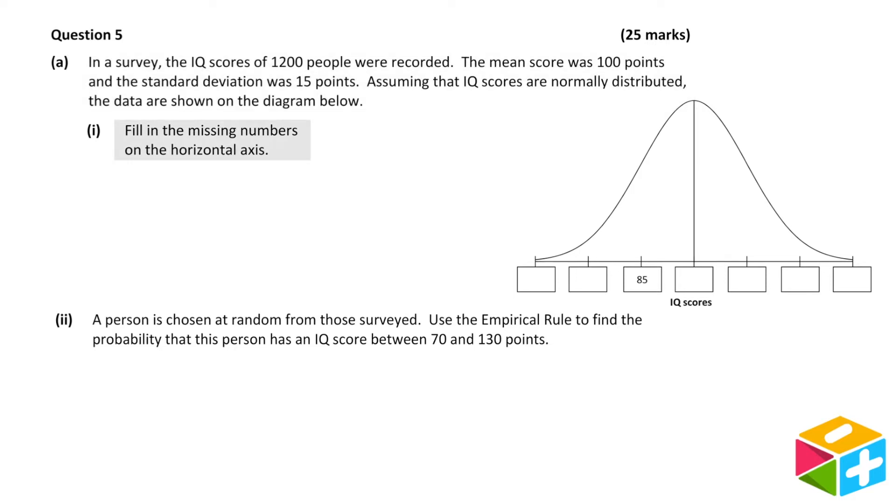Firstly, we must fill in the missing numbers on the horizontal axis. We are told that the data is normally distributed. When it comes to normal distributions, there are some conventions with the labeling. The middle mark is labeled with the mean.